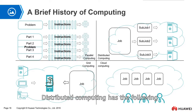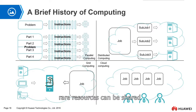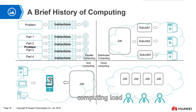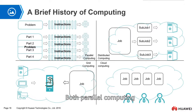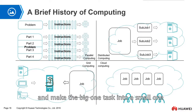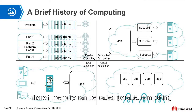Distributed computing has the following characteristics compared to other approaches. First, real resources can be shared. Second, distributed computing can achieve balanced computing load across multiple computers. Third, it can place programs on the computer that is most suitable for running them. Both parallel computing and distributed computing aim to get higher performance by breaking big tasks into small ones. If the processing units share memory, it can be called parallel computing.